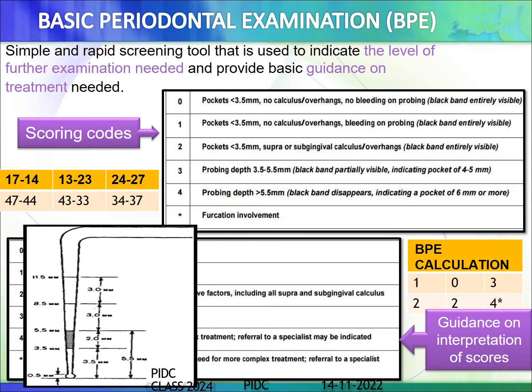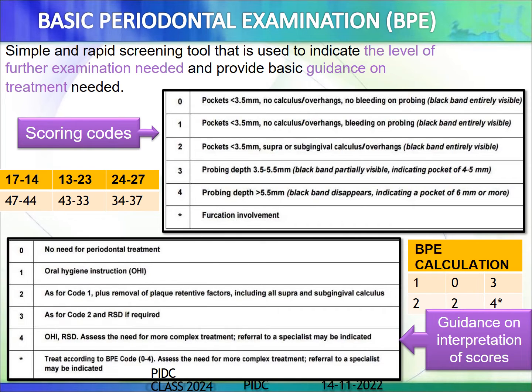Based on this, the BPE calculation is recorded for each sextant. For example, tooth numbers 17 to 14 have a score of 1, meaning the pocket depth is less than 3.5 mm, no calculus or overhangs, and bleeding on probing is present. Accordingly, you have treatment guidelines for each BPE score. Go through this charting — it is very important.